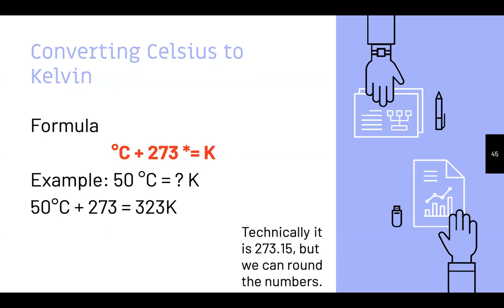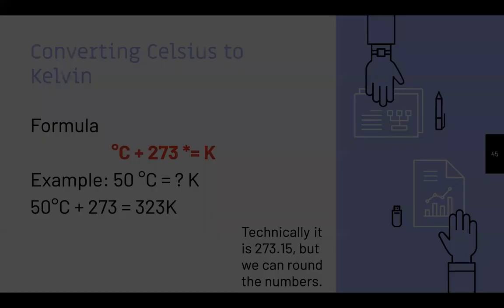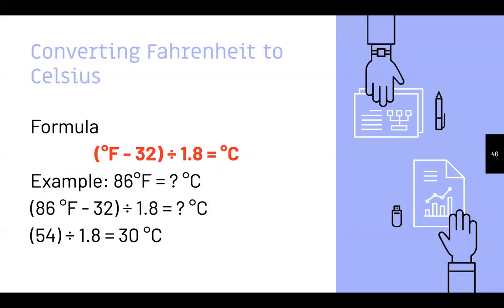Converting Celsius to Kelvin: °C + 273 = K (technically 273.15, but we can round). Example: 50°C + 273 = 323 K. Converting Fahrenheit to Celsius: (°F − 32) ÷ 1.8 = °C. The opposite of going from Celsius to Fahrenheit — instead of multiplying by 1.8 and adding 32, you subtract 32 and divide by 1.8.